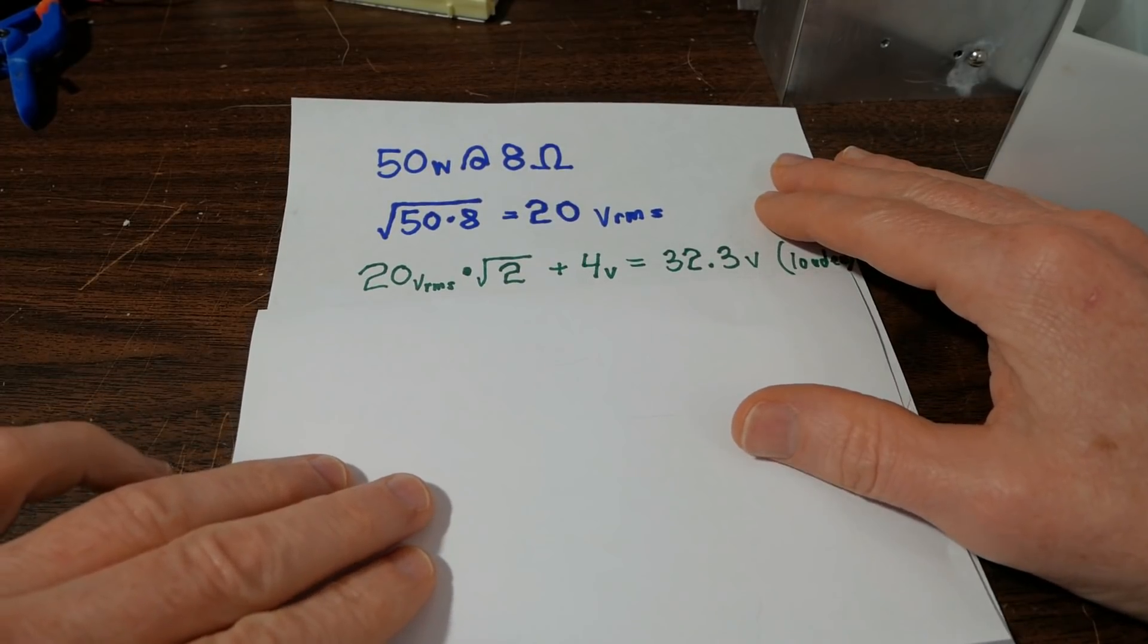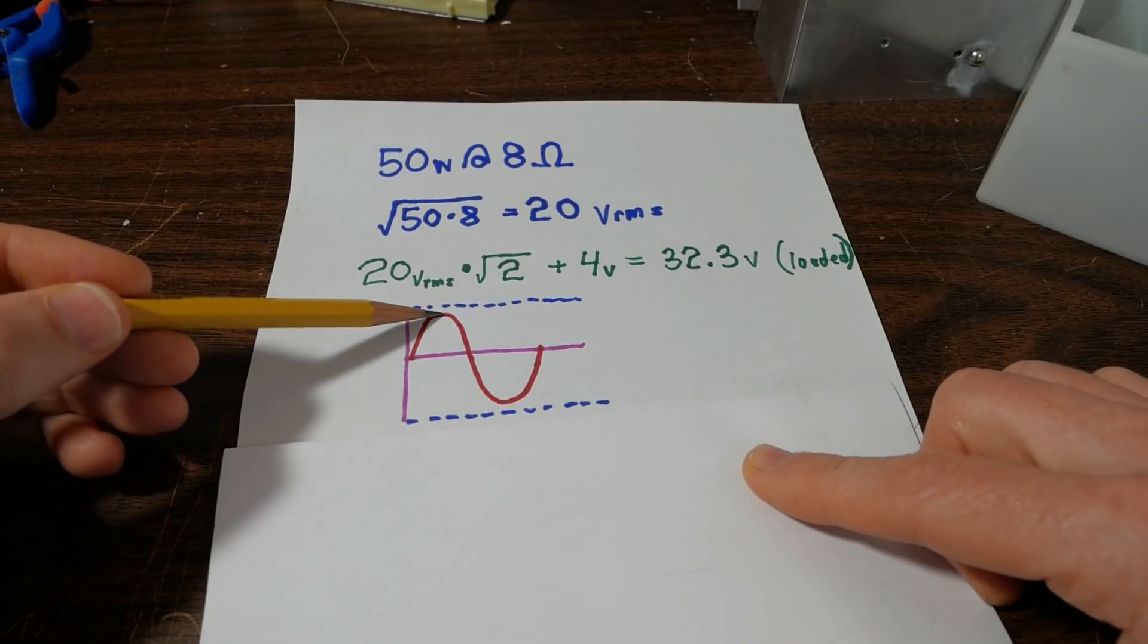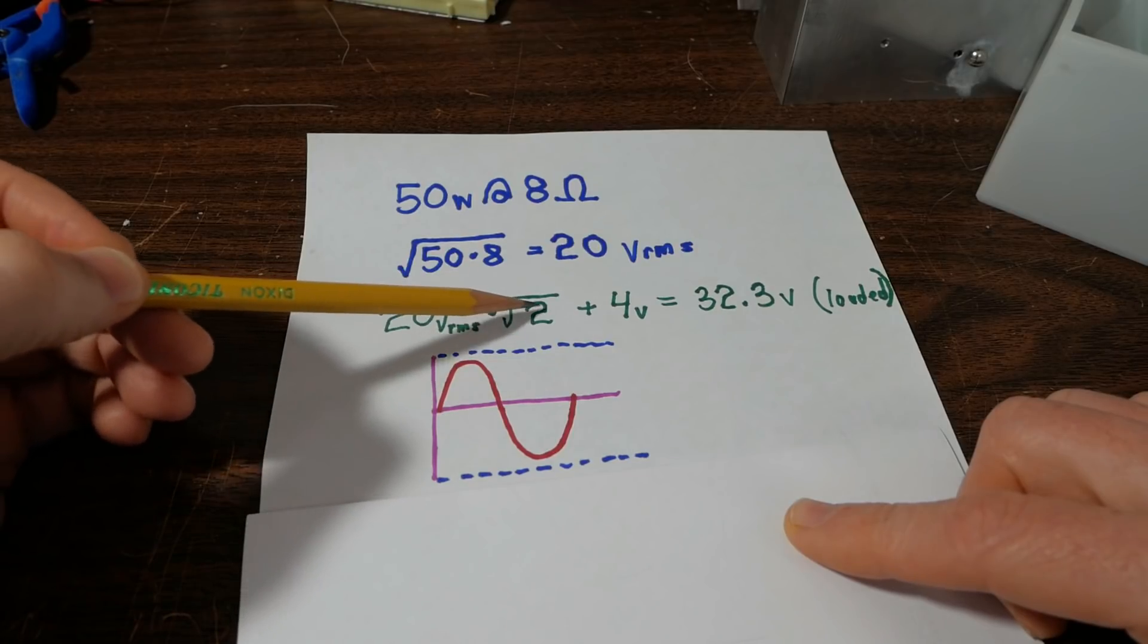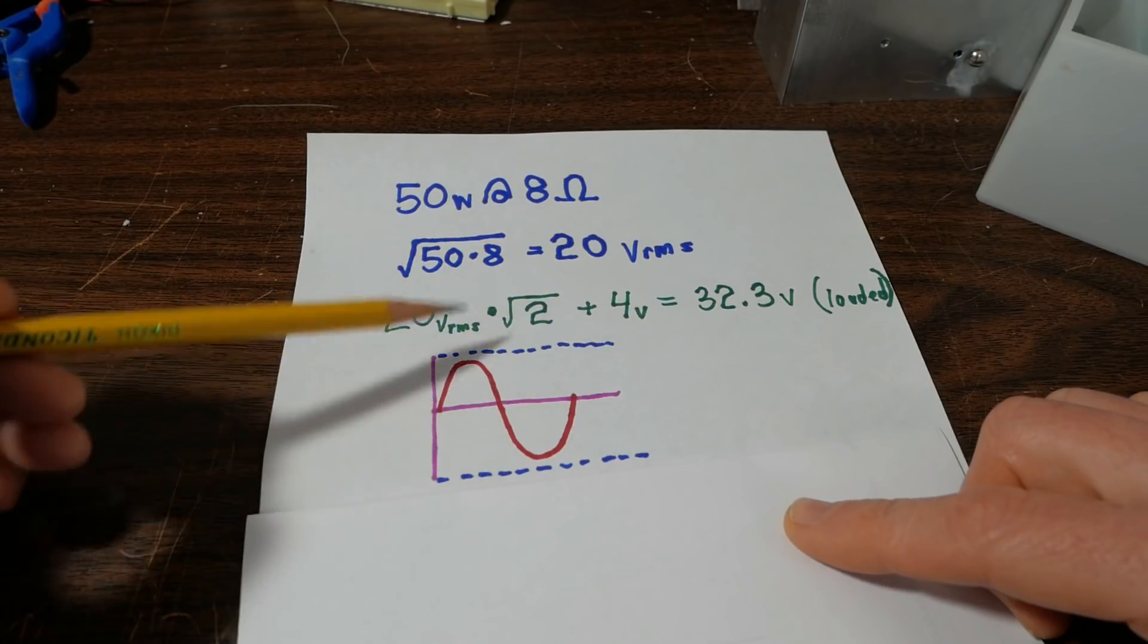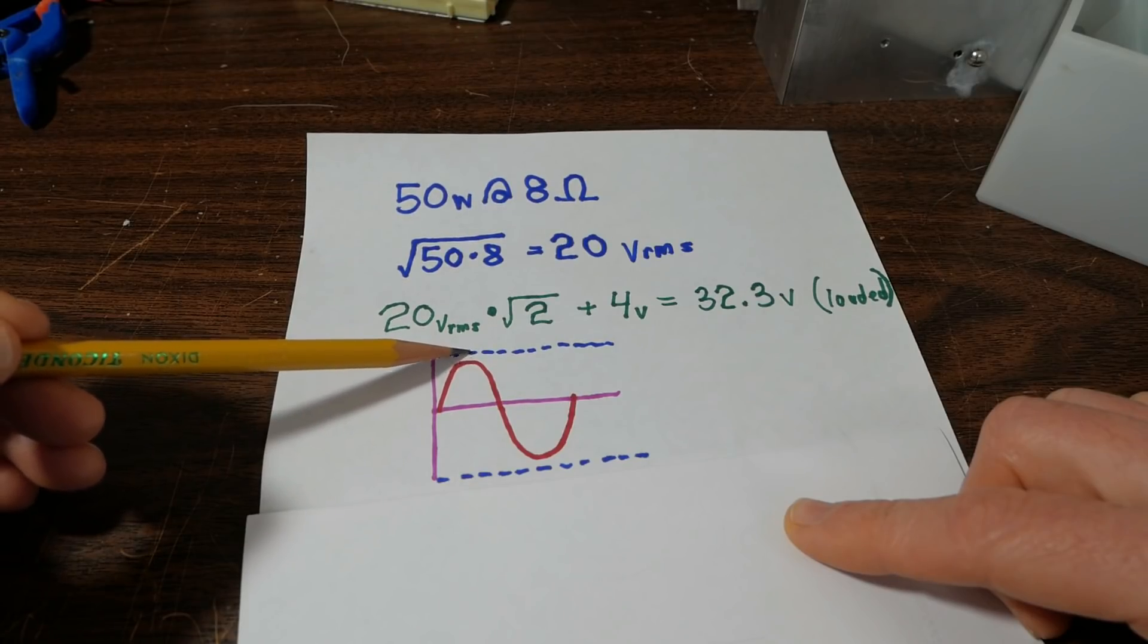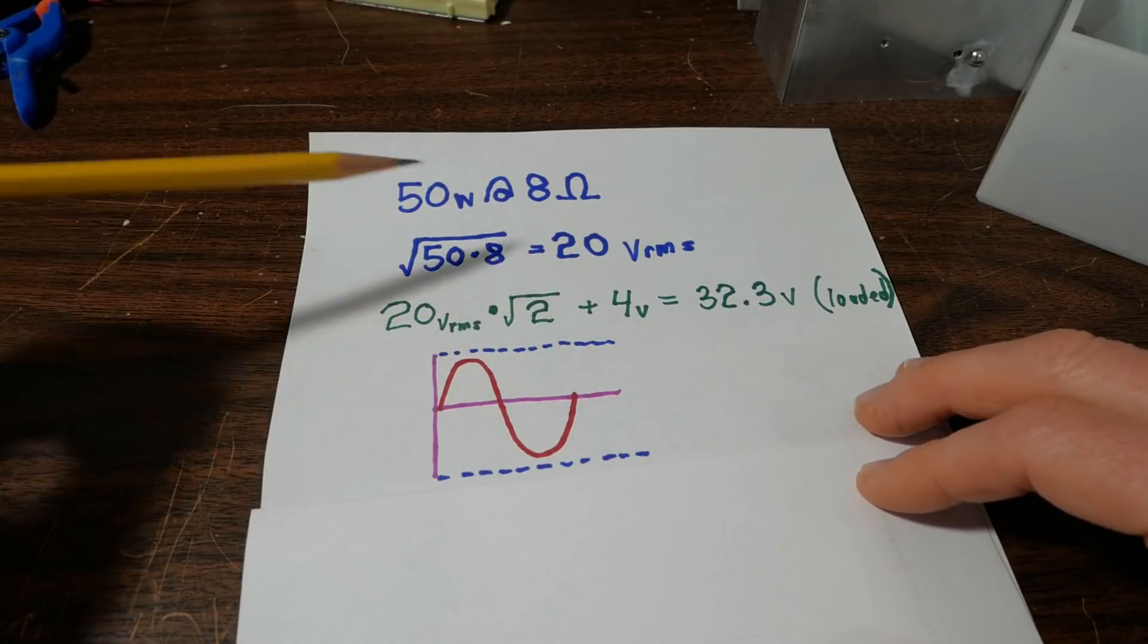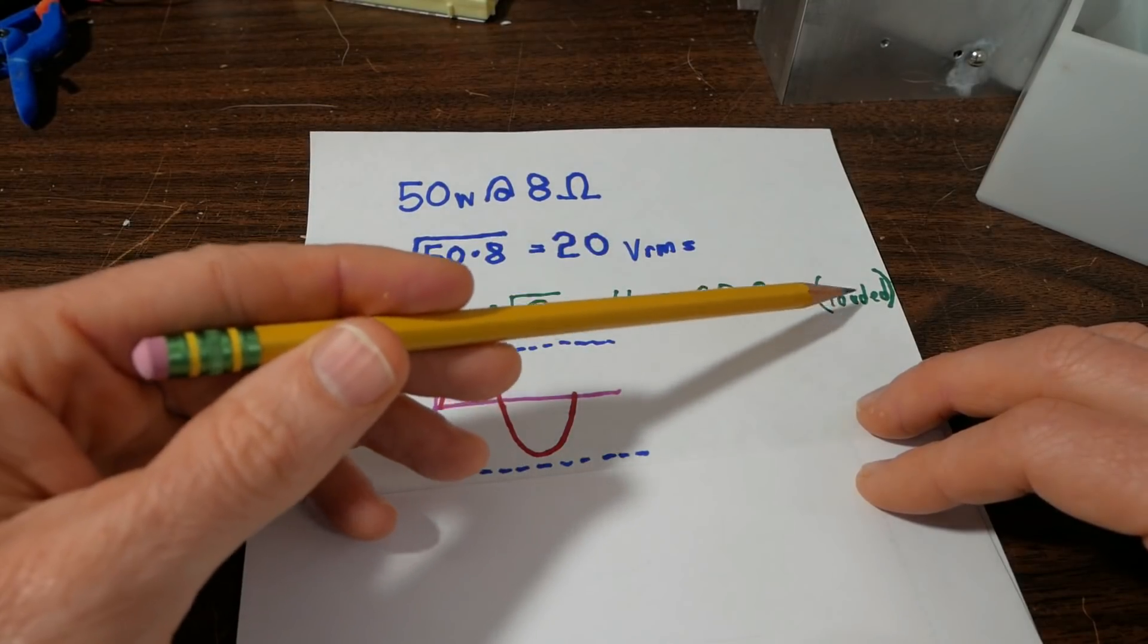Well we don't want RMS, we need to know the peak value because the supply rails is going to be somewhat beyond the peak value. So what we do is we take the RMS value, multiply it by the square root of 2, then I have to use a padding number here. There's going to be some voltage drop, like I say, between the sine wave peak and the supply rail. And given the losses in the amplifier, it will say about 4 volts. So we run the equation, we get 32.3 volts, and that's the rail under load.